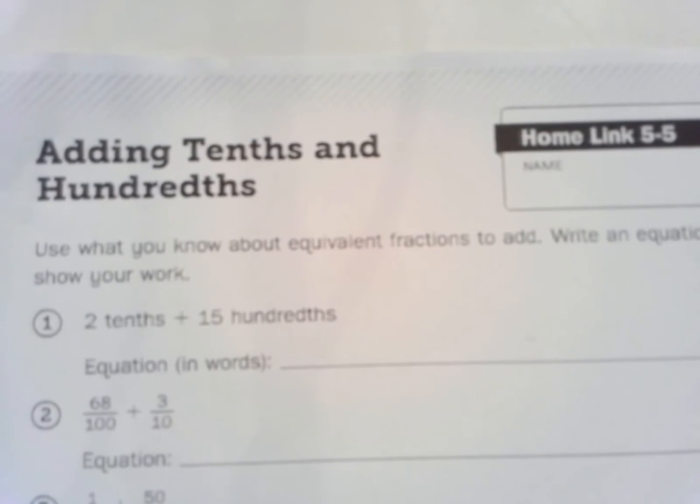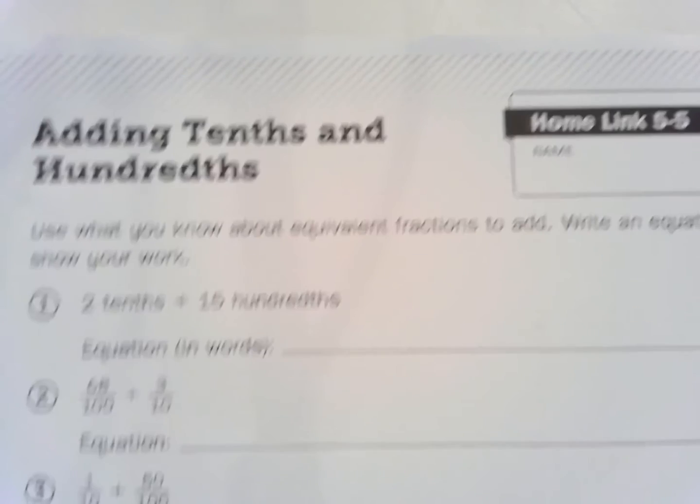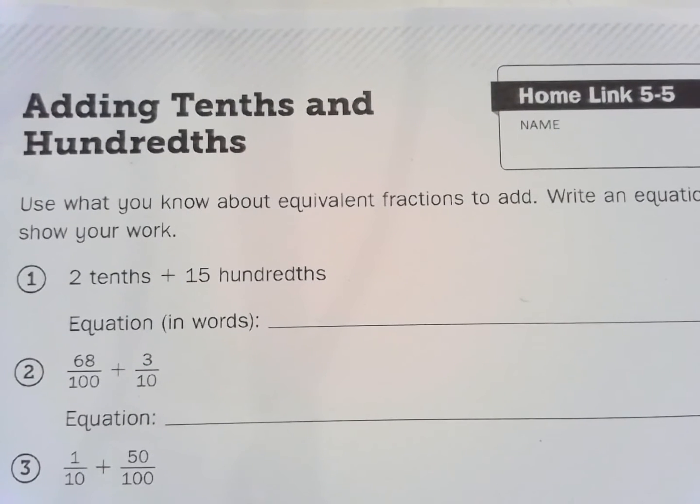So this is homelink 5-5, adding tenths and hundredths. Remember we did this today in class and we talked about how if you need to find a common denominator, if you have one fraction that is tenths and one that is hundredths, you can either make the common fraction tenths if your numerator in the hundredths is a multiple of ten, or if it isn't, then you can just make them both hundredths by multiplying the tenths by ten.